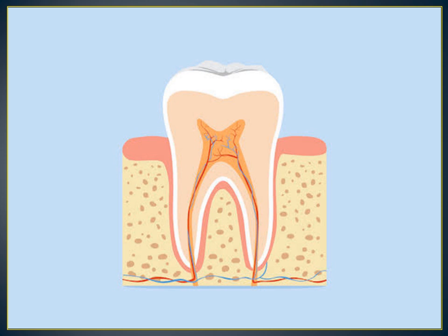Next is pulp. Dental pulp is the central part of the tooth filled with soft connective tissues. These tissues contain blood vessels and nerves that enter the tooth from a hole at the apex of the root. The pulp chamber is in the crown portion, and in the root portion, pulp is present in the form of a canal, so it is known as root canal in the root portion.